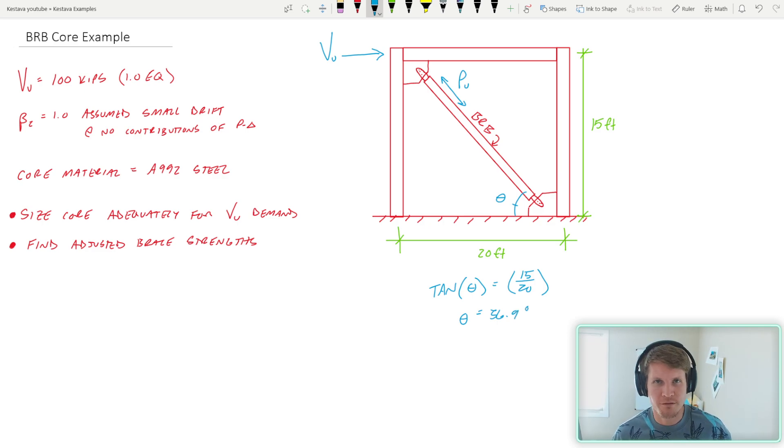And now for a single brace configuration like you have here, that's when you just have, as the name suggests, one brace in a braced frame. You can have many other configurations—multi-story, X pattern, chevron. This one is single brace. And it modifies the geometry slightly. But ultimately, we can derive P sub U in the single brace configuration using this equation. Very straightforward. Let's plug everything in. That spits out actually very cleanly, 125 kips as our P_U demand axial load on our brace.